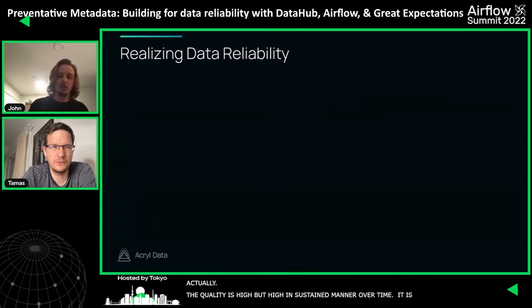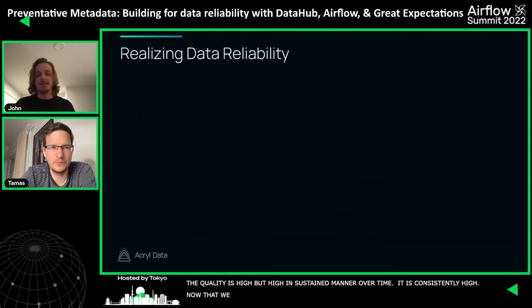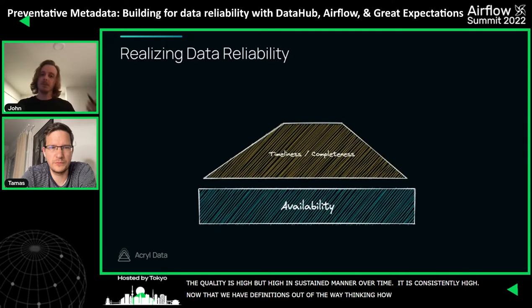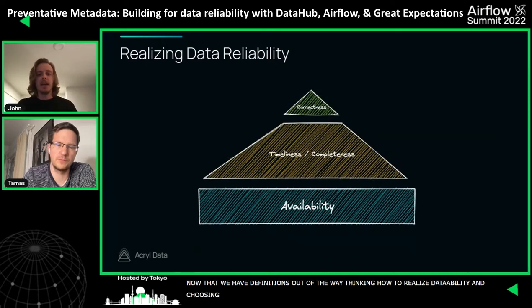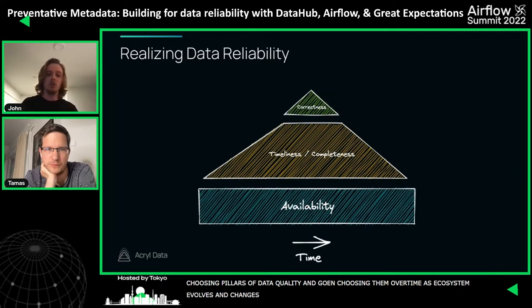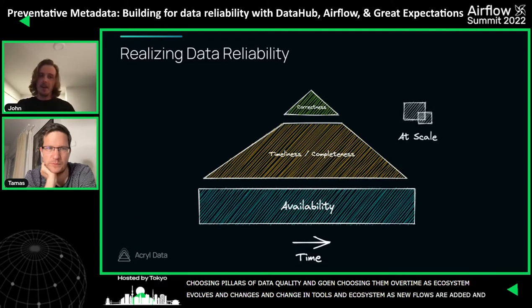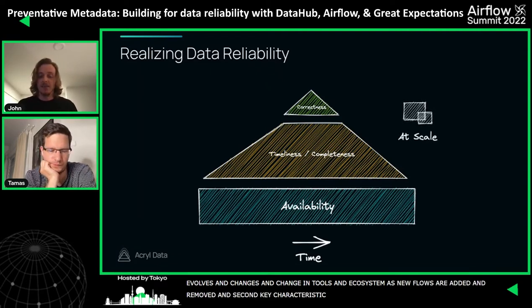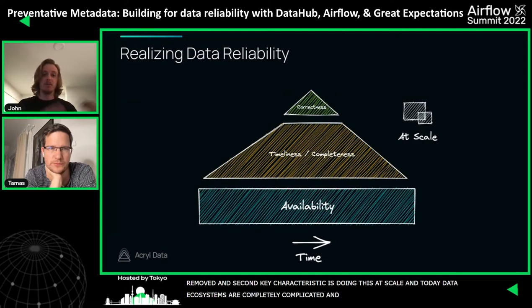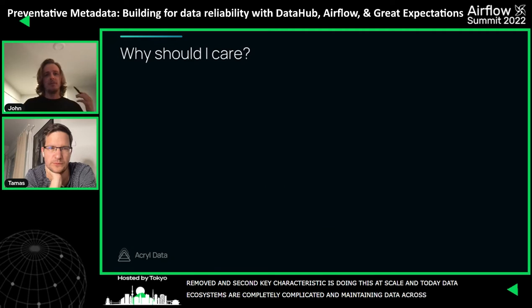Now that we have those definitions, we can start thinking about how to realize data reliability — achieving those pillars of data quality over time as a data ecosystem evolves: as the scale of data changes, as the tools change, and as new flows are added and removed. The second key characteristic is doing this at scale. Today, data ecosystems are extremely complicated, so being able to maintain data quality through time across many different pipelines is the core challenge.